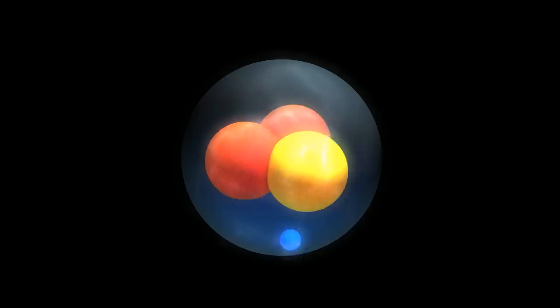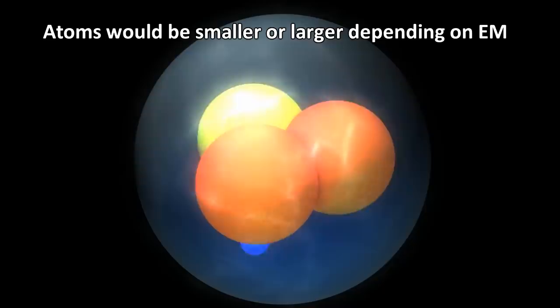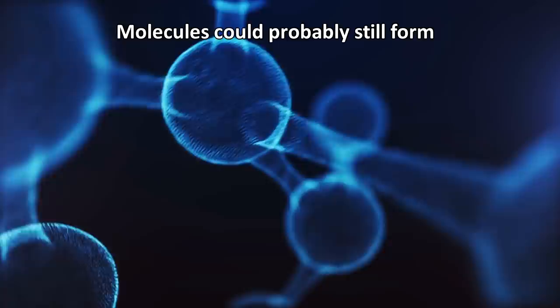For example, if the strength of electromagnetism was slightly larger or smaller, it would mean that atoms would be slightly smaller or larger, respectively. This probably would not preclude atoms from being formed, or chemistry from taking place. Life could probably still exist, but it would just be different.